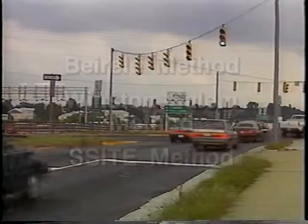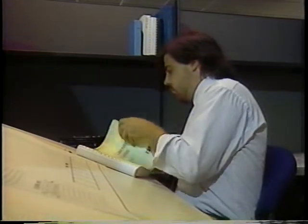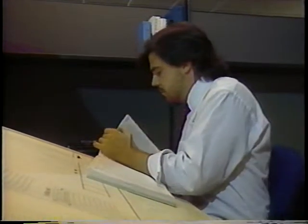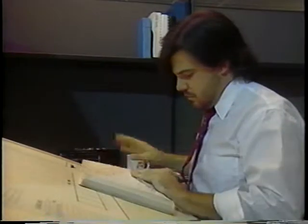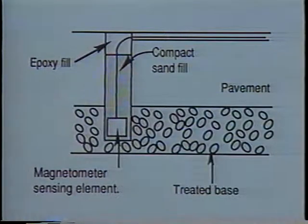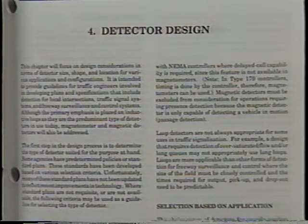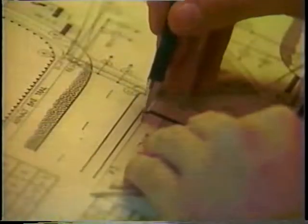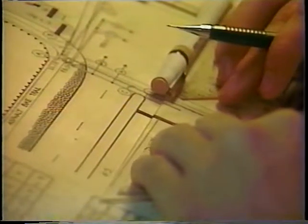During the design process, you may require information concerning special applications such as bicycle detection or vehicle counting, or you may want information about magnetometer and magnetic detector configurations. Please consult chapter 4 of your handbook for this information. Now that we have examined the detector design process, let's proceed to section 3 for a discussion on detector installation.